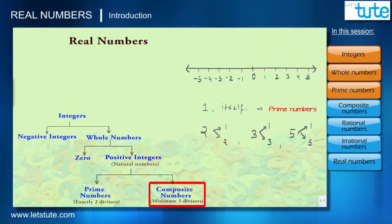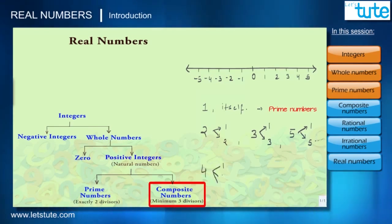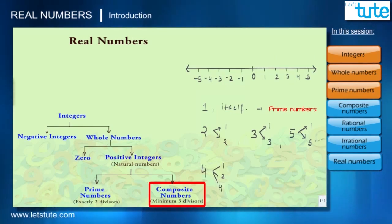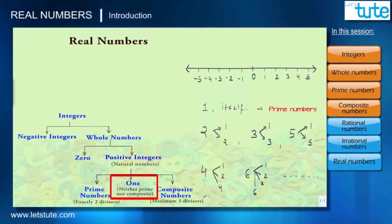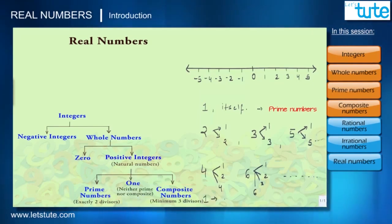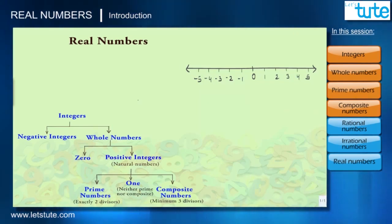Composite numbers are numbers which have at least three divisors or more. For example, four has three divisors: one, two, and four. Six has four divisors: one, two, three, and six itself. So they are all composite numbers. The number one is the only number which has only one divisor, so one is neither prime nor composite.